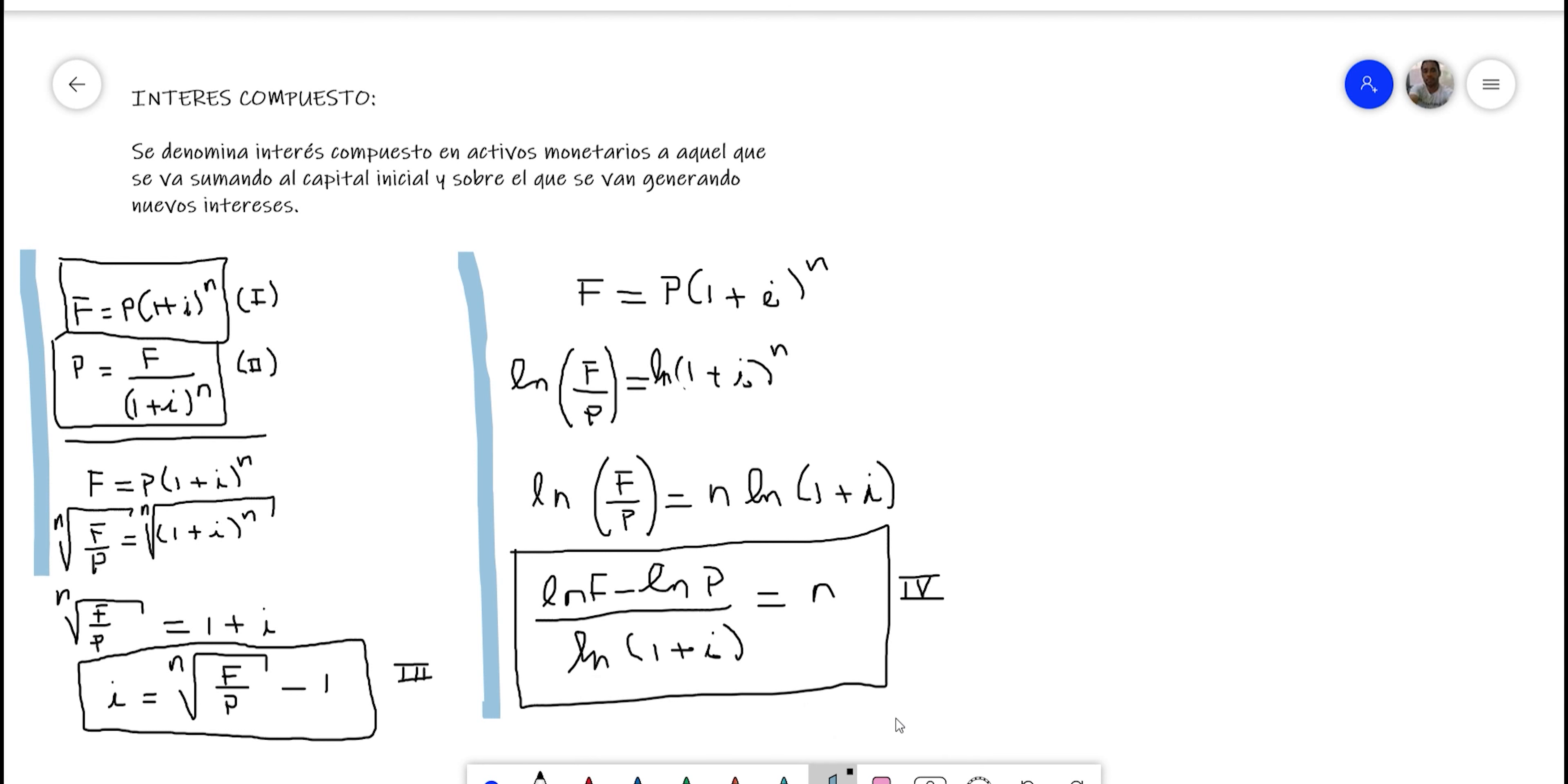What are we going to do now to focus on the development of practical cases? Let's imagine a simple case. Let's say that in a financial institution, they lend me $2,500, so that is the present value or capital that we are going to denote with the letter P. They lent me $2,500 and at the end of 5 years, I have to pay.